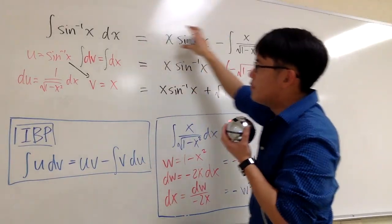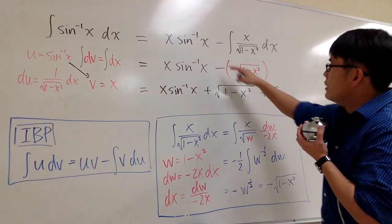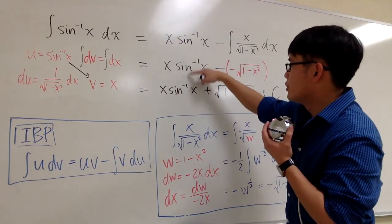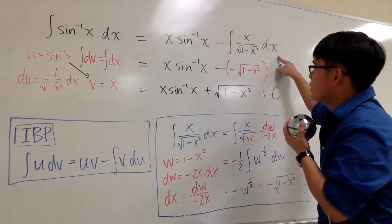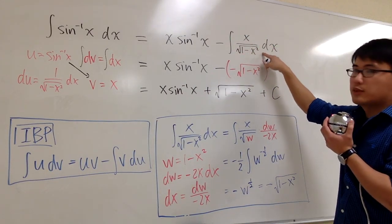So that will be the first step for the integration by parts. This is done. This is part of the answer already. So I'm pretty much just going to copy this down a few more times. But then this is the integral that we have to work out still. What's the integral of x over square root of 1 minus x squared?